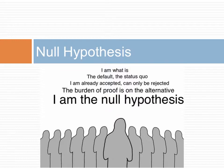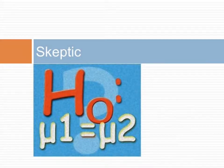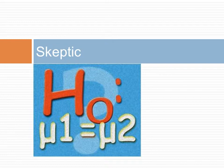The null hypothesis often represents either a skeptical perspective or a claim to be tested. The alternative hypothesis represents an alternative claim under consideration and is often represented by a range of possible parameters. The null hypothesis is shown as H sub 0. Mu sub 1 indicates the mean of population 1 and mu sub 2 indicates the mean of population 2. The null hypothesis is that the two populations have equal means. A skeptic will not reject the null hypothesis unless the evidence in favor of the alternative hypothesis is so strong that she or he rejects the null hypothesis.